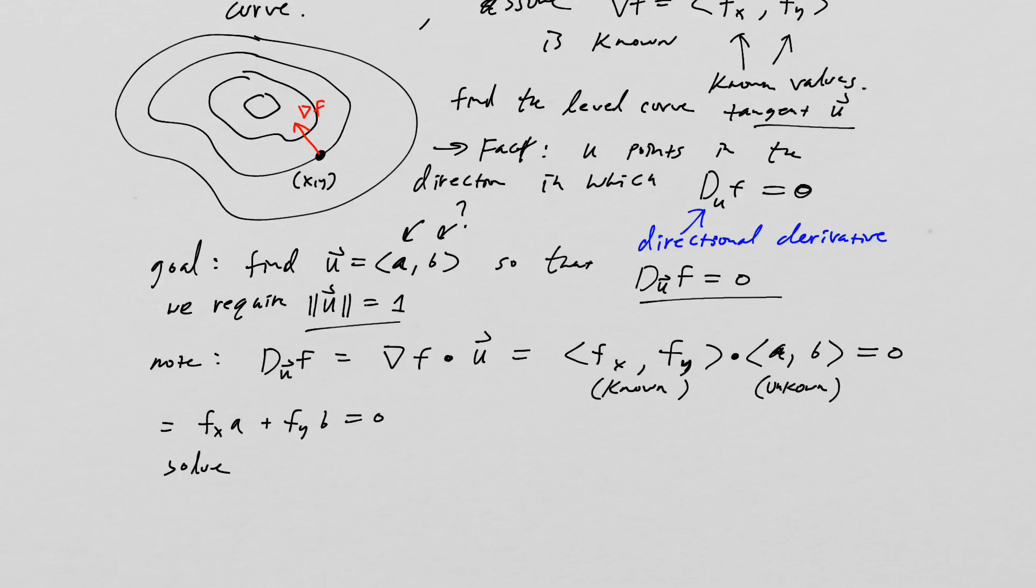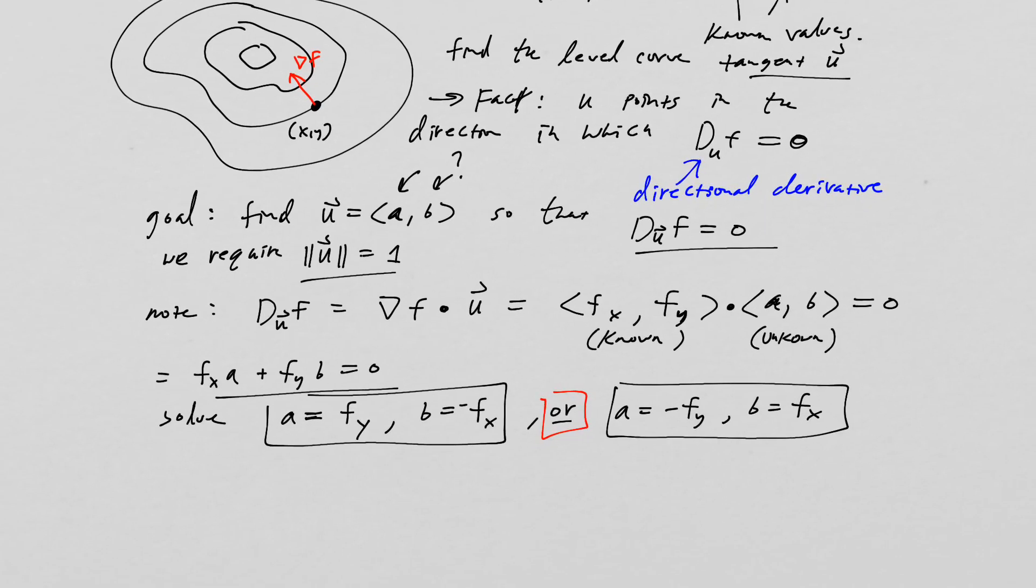And we find that, well, I think we can actually get a pretty good picture of what it has to be. A can be equal to—or no, I'm sorry—it should be equal to f_y. And b can be equal to negative f_x. Or there's another solution, which is a equals negative f_y, and b equals positive f_x. So either one works.